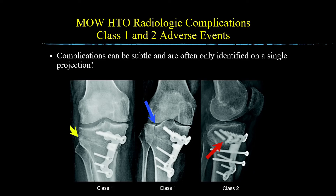Fractures and hardware failure can be easily overlooked on post-op images. The radiograph on the left shows an example of a class 1 adverse event manifested by a non-displaced hinge fracture through the lateral tibial cortex at the margin of the osteotomy, as shown by the yellow arrow. A hinge fracture is an extension of the osteotomy plane through the lateral tibial cortex. The middle radiograph also shows a class 1 adverse event manifested by a minimally displaced tibial plateau fracture, indicated by the blue arrow extending proximally from the osteotomy plane; the patient was asymptomatic and did not require additional treatment. The image on your right is a lateral knee radiograph illustrating a class 2 adverse event demonstrating a single fractured screw shown by the red arrow; the patient needed to continue protected weight bearing for longer than the usual six weeks.